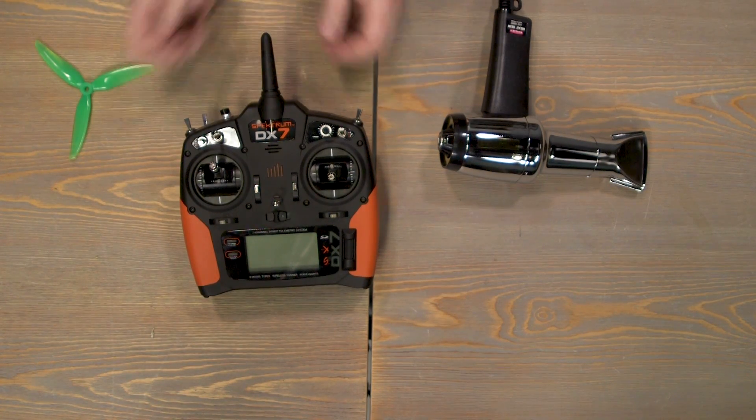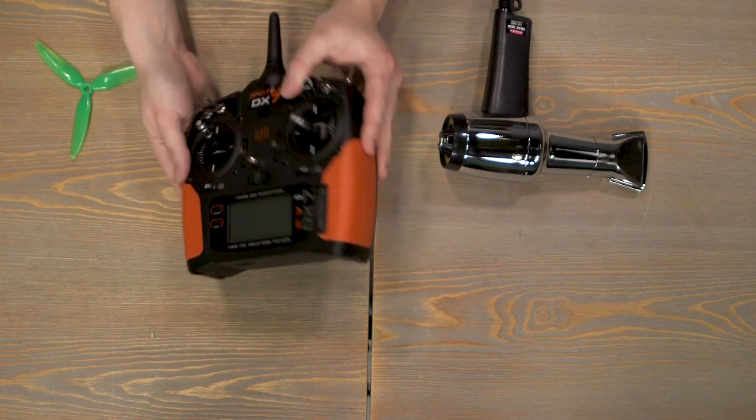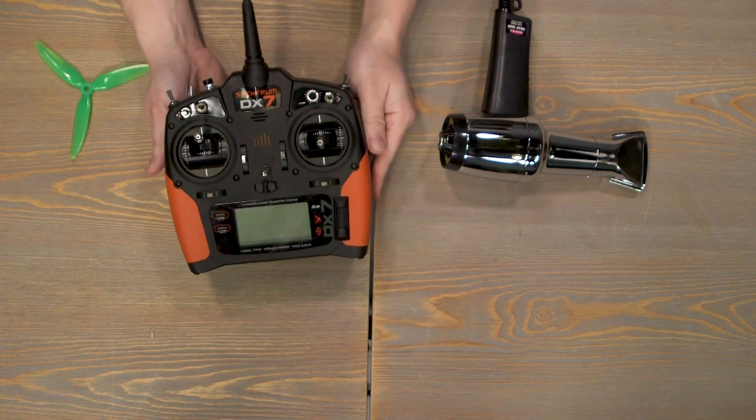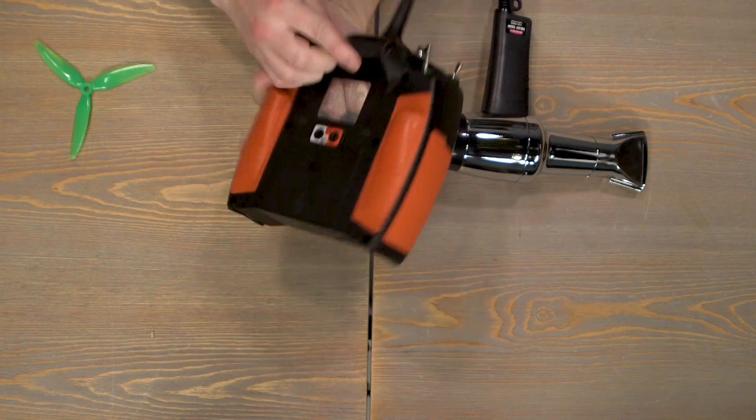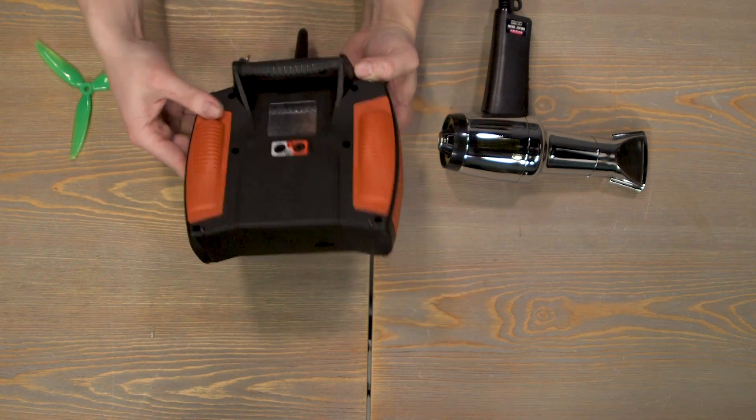And there you have it. With a little bit of time and elbow grease, you have rejuvenated the beauty in your Spectrum transmitter and given it a new little bit of pizzazz with the orange grip set for your Spectrum transmitters.